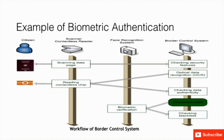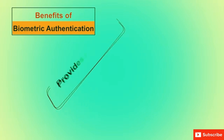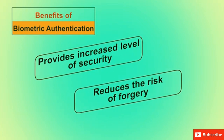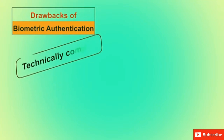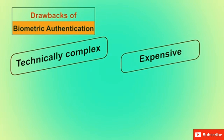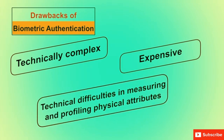Benefits of biometric authentication: they are highly secure and we cannot forge the physical characteristics of any individual, reducing the chance of forgery. Drawbacks: they are complex to manage and require costly, expensive tools. Different challenges occur during processing — for example, if a frontal face is stored in the database but a non-frontal face is captured, the system may not detect it. Similarly, if a fingerprint is damaged due to cuts and marks, your phone might not be able to identify you.